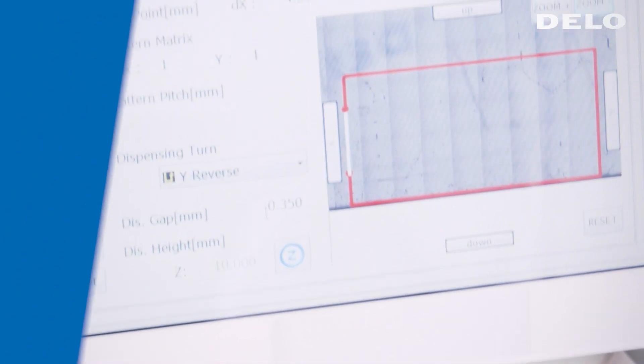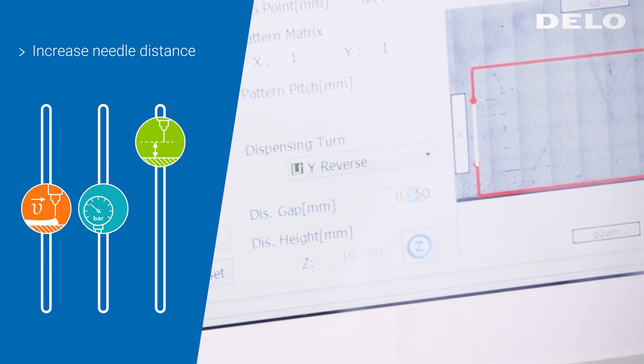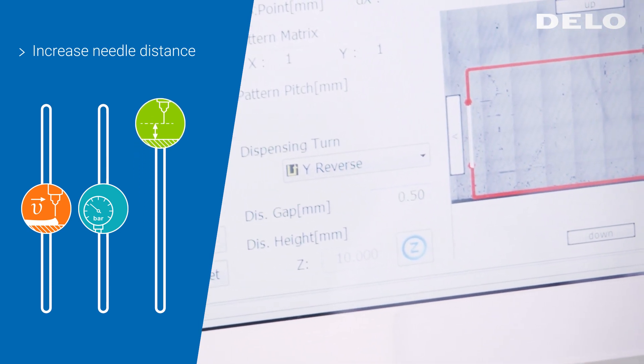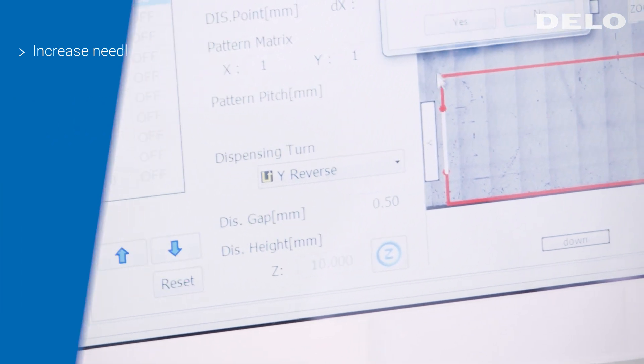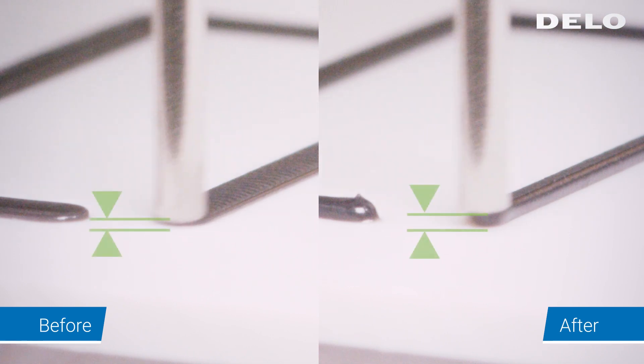As a third variable, you can increase the distance between the dispensing tip and the material. The larger needle distance ensures that the adhesive is not pressured flat during application.